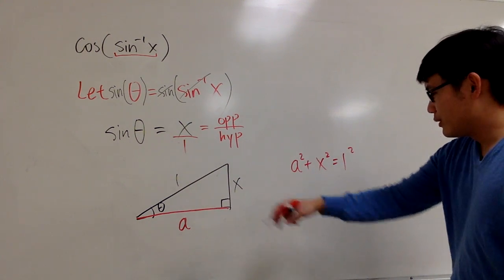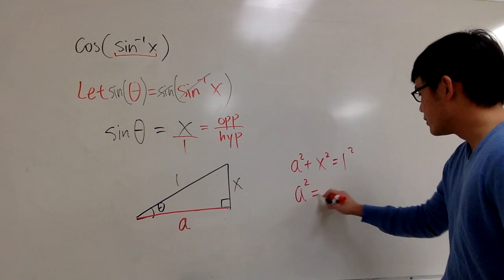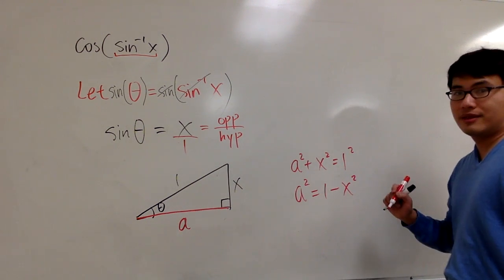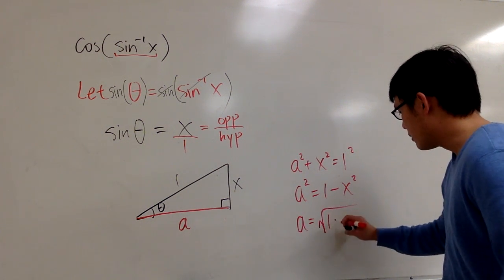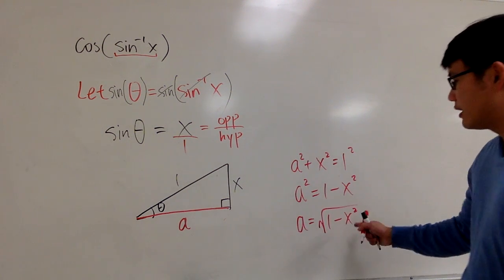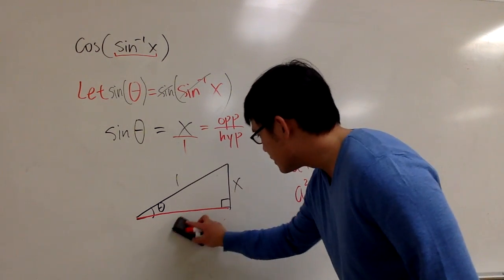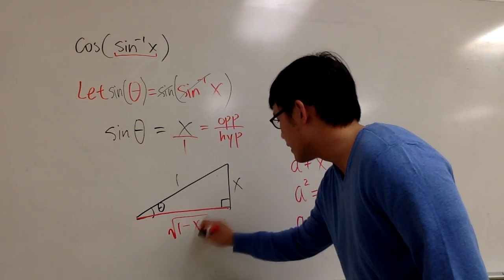And then to get a, I have to subtract x squared on both sides. a squared equals 1 minus x squared. 1 squared is 1. I can take square root on both sides. a equals square root of 1 minus x squared. And you take the Pythagorean theorem for this. Anyways, a is square root of 1 minus x squared.